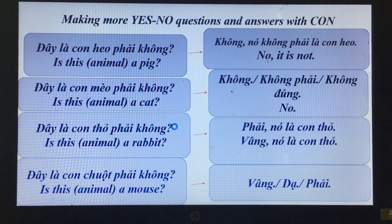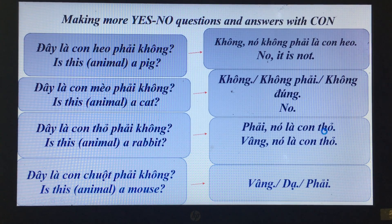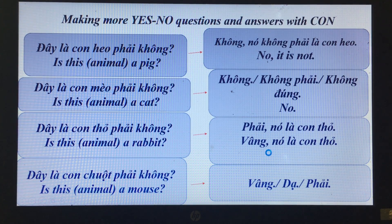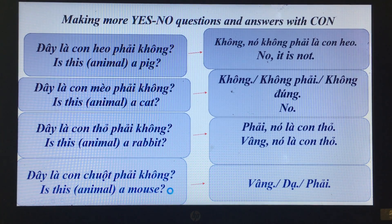'Đây là con thỏ phải không?' — Is this animal a rabbit? 'Phải, nó là con thỏ.' / 'Vâng, nó là con thỏ.' — Yes, it is. 'Đây là con chuột phải không?' — Is this animal a mouse? 'Vâng, dạ, phải.' — Yes.